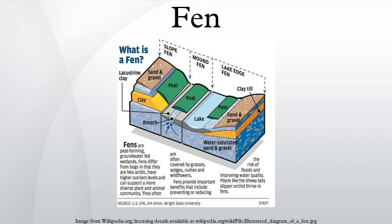Fens are distinguished from bogs, which are acidic, low in minerals, and usually dominated by sedges and shrubs, along with abundant mosses in the genus Sphagnum.